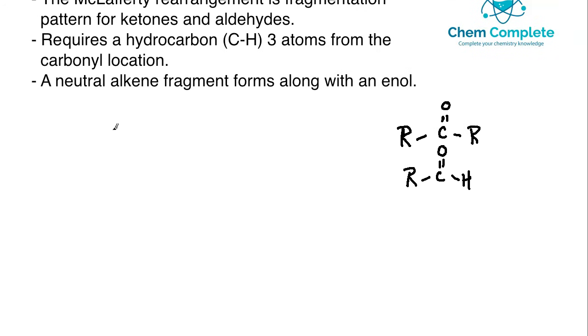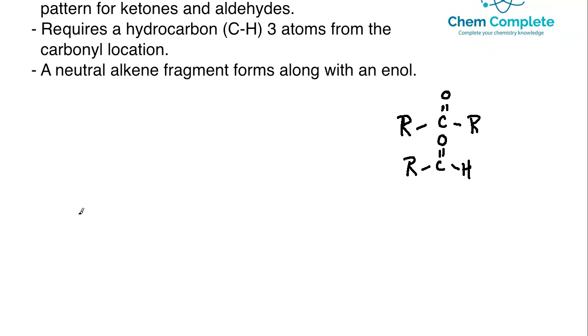Let's draw the initial structure and then take a look at how the rearrangement may occur. We'll work with a ketone for this example and keep it generally simple. We'll say CH3-CH2-CH2, so that's three atoms away, and this carbon right here is going to have hydrogens on it, so that'll work. Then we will bring about the carbonyl group.